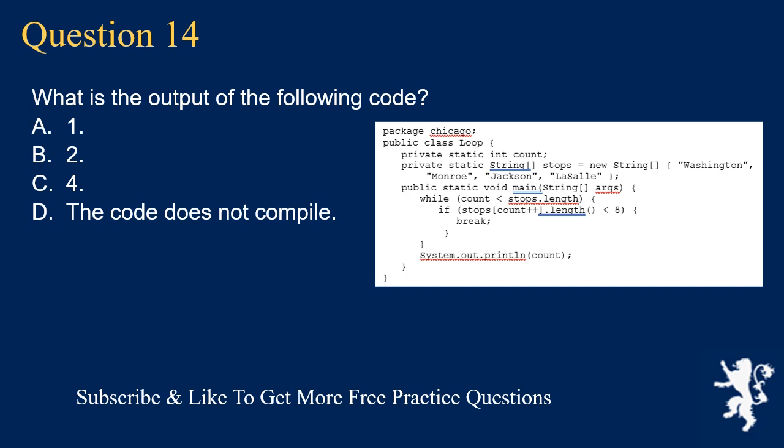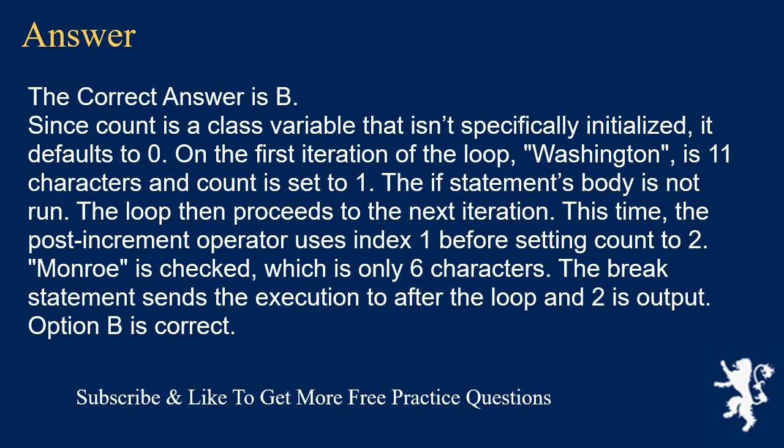Question 14. What is the output of the following code? A. 1. B. 2. C. 4. D. The code does not compile. The correct answer is B. Since count is a class variable that isn't specifically initialized, it defaults to zero. On the first iteration, "Washington" is 11 characters and count is set to one. The if statement's body is not run. On the next iteration, the post-increment operator uses index one before setting count to two. Monroe is checked, which is only six characters. The break statement sends execution after the loop and two is output. Option B is correct.